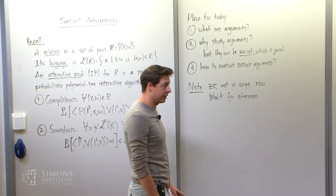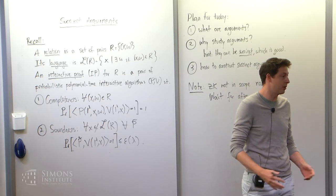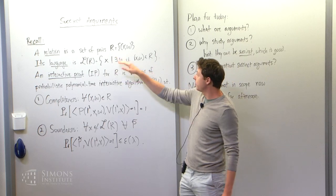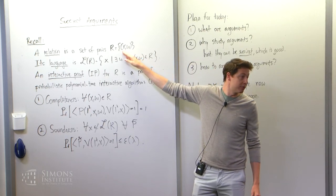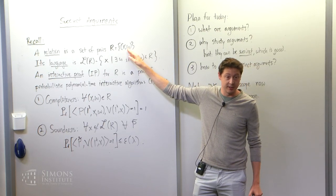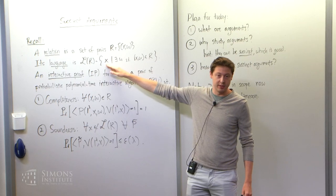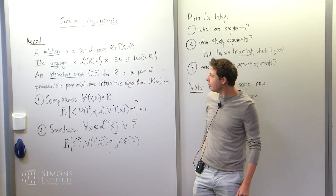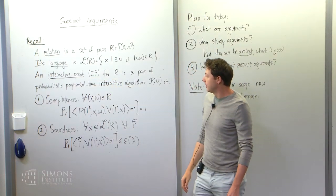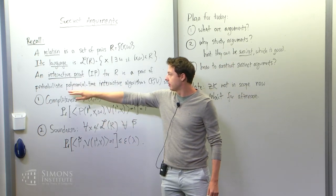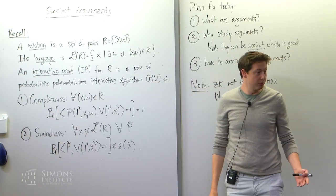Today we'll be mostly working with languages that have witnesses. To make it easier to talk about them, I'll just talk about relations. A relation is a set of pairs where you have X as your instance and W as your witness. For example, X could be a Boolean formula, and W would be the corresponding satisfying assignment. When I say the language for the relation, I mean all instances for which there is a witness. Yesterday we saw the notion of an interactive proof — sometimes denoted just IP — which is a pair of probabilistic polynomial-time interactive algorithms, the prover and the verifier, denoted P and V, for which you have two properties.